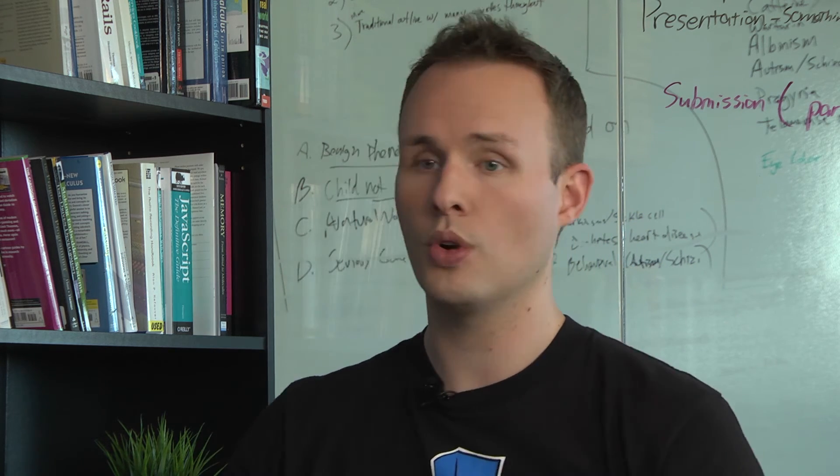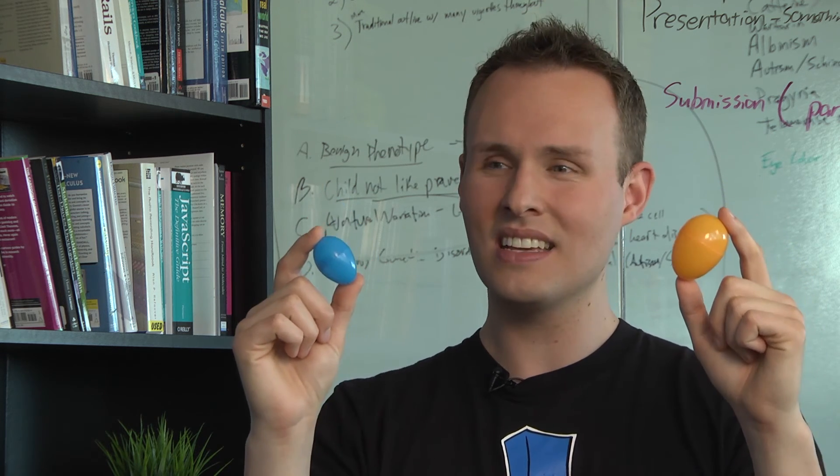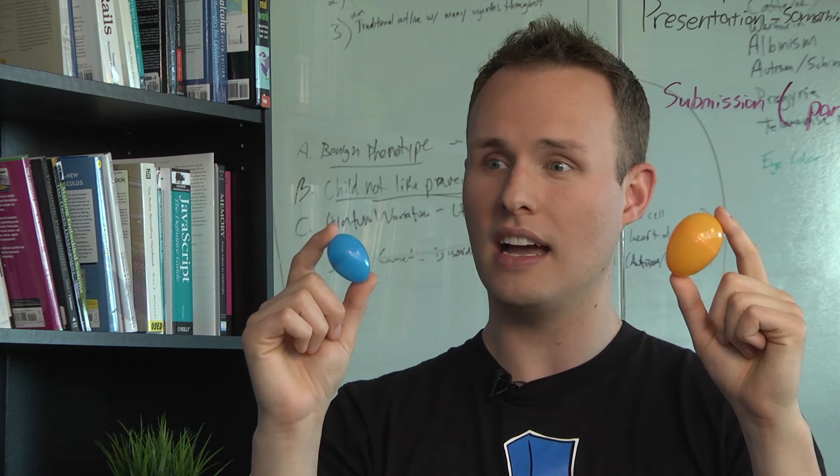But it gets interesting when we have to figure out what happens in the mixed situation, where you get a brown allele from one parent and a blue allele from another parent. In this case, what color eyes do you think the children are gonna have? I don't know, why don't you answer this one?